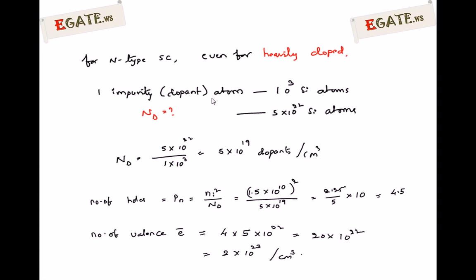Looking at the other options: the number of holes in an extrinsic semiconductor is calculated from the mass action law: N × P = NI². For N-type, NN × P = NI², so P = NI² / ND ≈ (1.5×10¹⁰)² / (5×10¹⁹), which gives only about 4.5 holes per centimeter cube. So holes are very, very few.